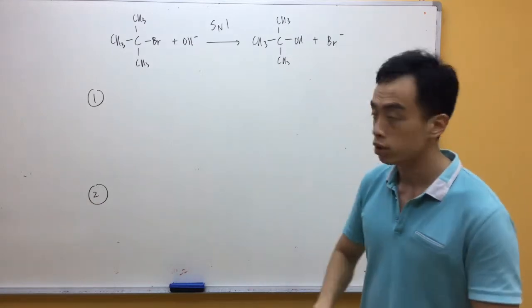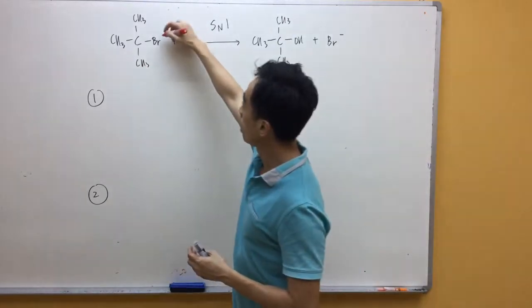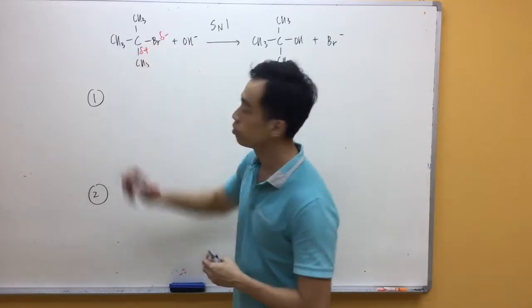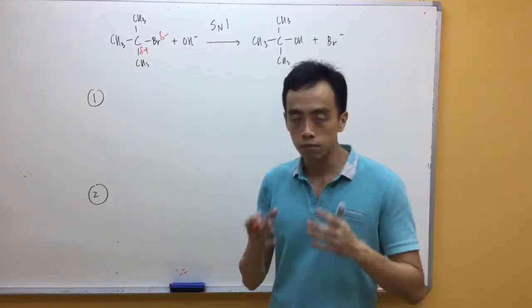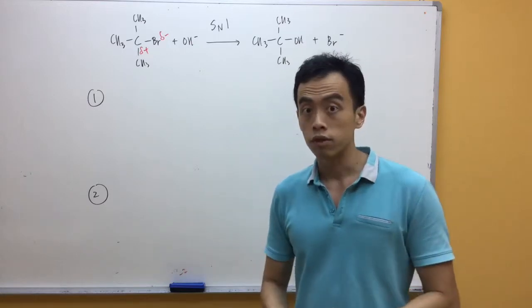Which is fairly simple because you have carbon attached to Br, which is more electronegative. So, Br will carry a partial minus charge. Therefore, carbon will carry a partial positive charge. If my carbon is positively charged, it will attract a nucleophile, which is negatively charged.